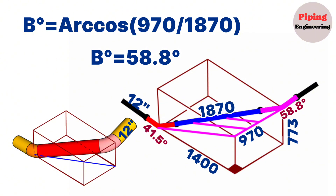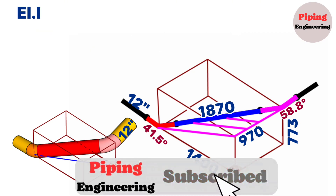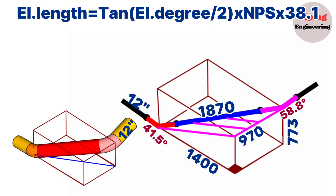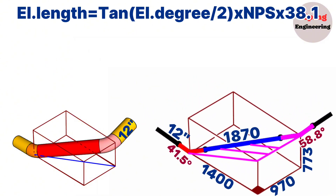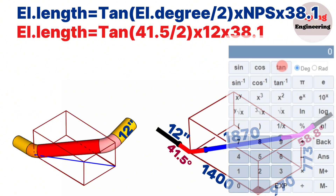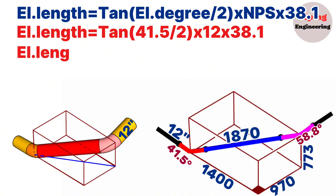Now let's calculate the center-to-end dimension of the cut elbows. The formula is: elbow length in millimeters equals tangent of (elbow degree divided by 2), multiplied by the nominal pipe size (NPS), multiplied by 38.1. For the 12-inch 41.5-degree butt weld elbow: tangent(41.5/2) × 12 × 38.1 equals 173 millimeters.